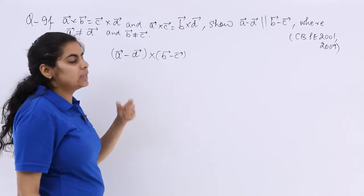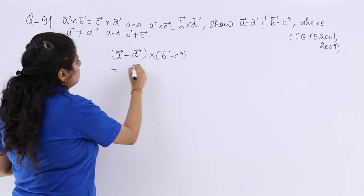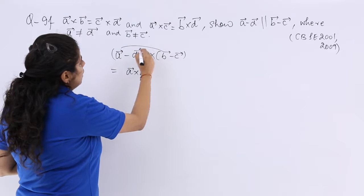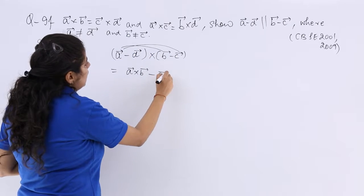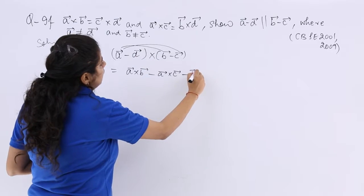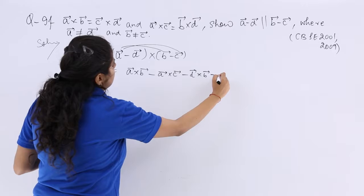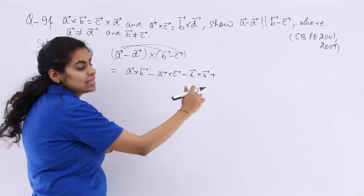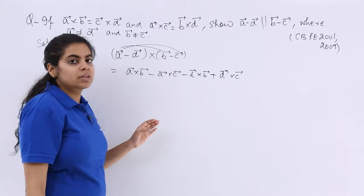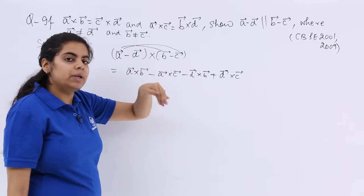So let's open this up. I am opening this up to A⃗×B⃗ minus A⃗×C⃗ minus D⃗×B⃗ minus and minus makes it plus D⃗×C⃗. This is simple opening up in the order.